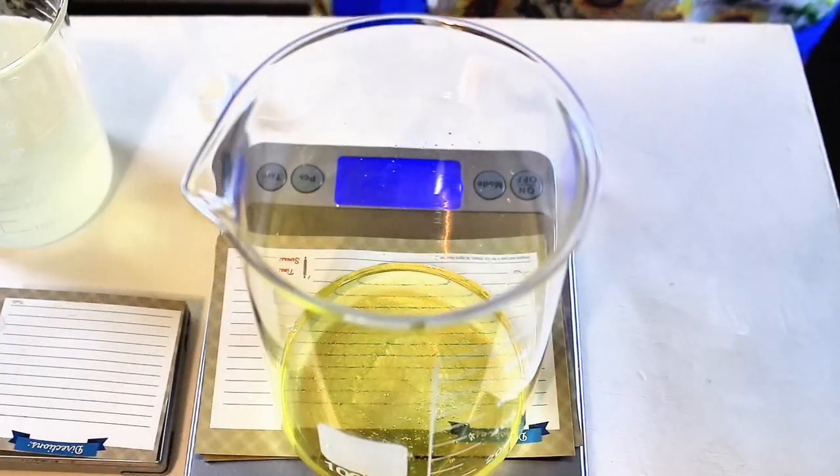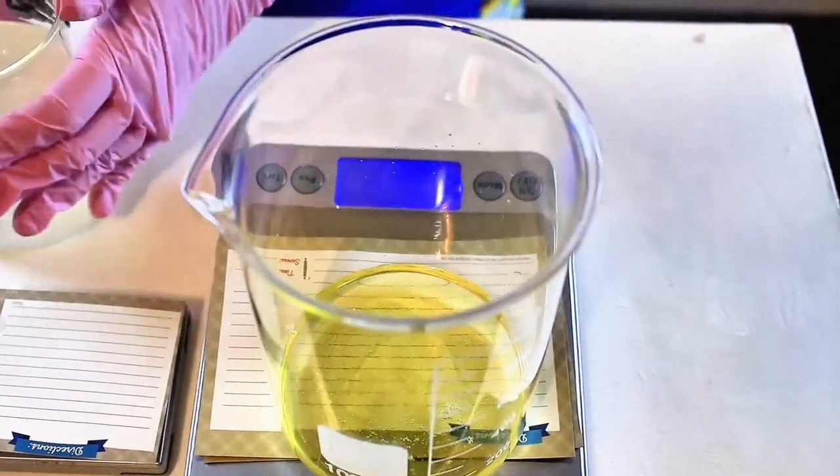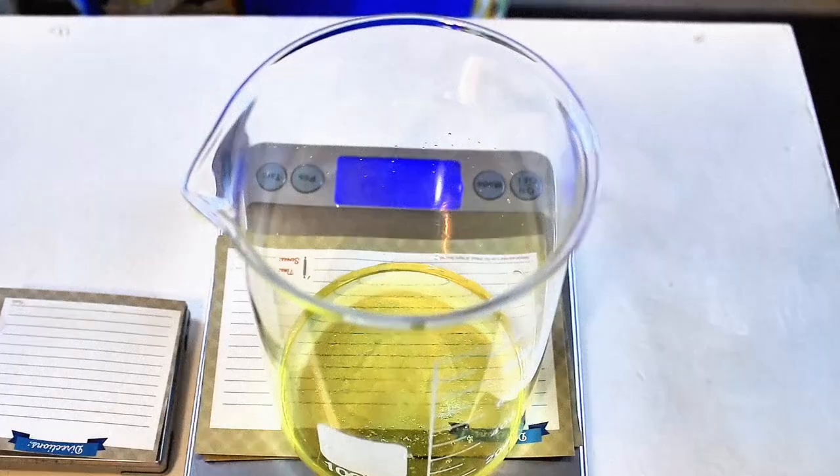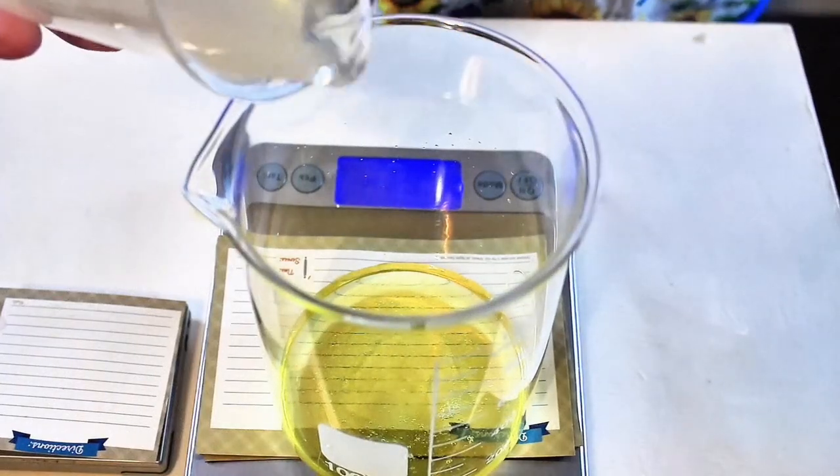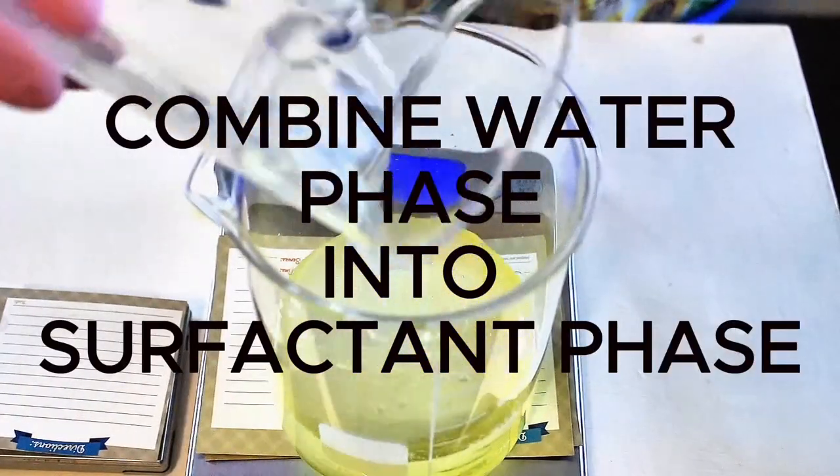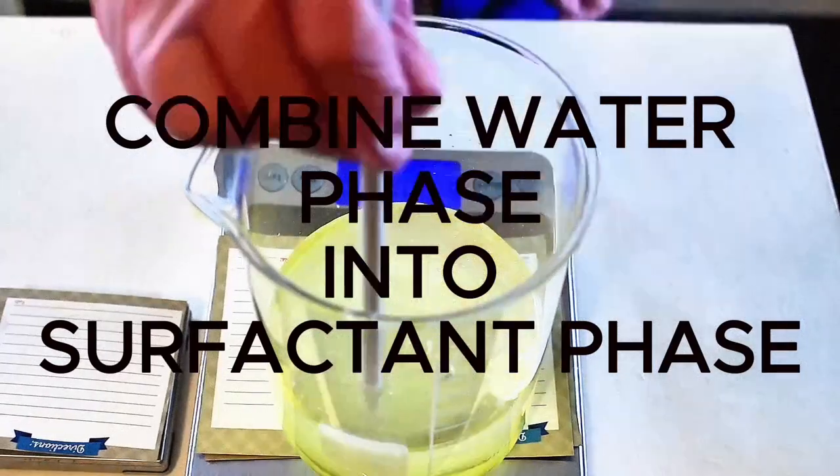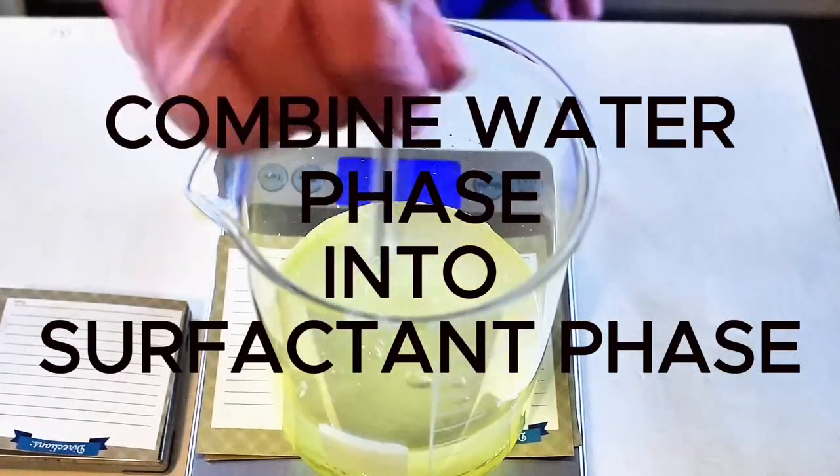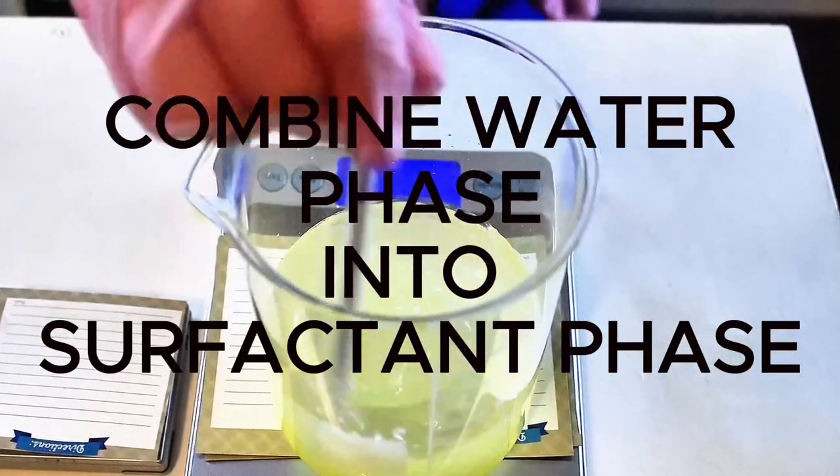It's time to add our water and xanthan gum mixture into the surfactant base. We have to stir very slowly, or this will create a lot of bubbles and a lot of foam. Sometimes it just never goes away. You just want to stir until it's incorporated fully.